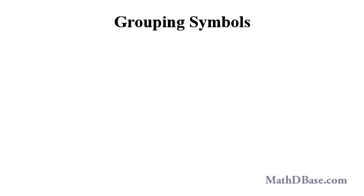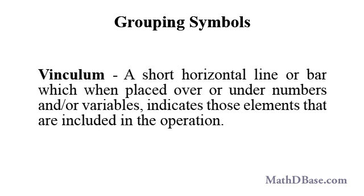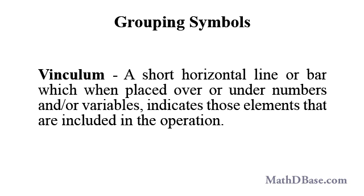Radicals such as the square root symbol use another kind of grouping symbol called a vinculum. A vinculum is a short horizontal line or bar which, when placed over or under numbers and or variables, indicates those elements that are included in the operation. In the square root, the vinculum bar is used to indicate all digits that are to be included in the taking of the square root.